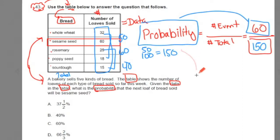So we could say that the probability of getting a sesame seed loaf of bread is going to be 60 over 150. But the answer is in percent form, so we've got to turn this fraction to a percent. Let's start first by reducing this fraction down. Do you see the zeros? That means both of these can be divided by a factor of 10. So let's try that. Divide the 60 by 10, the 150 by 10, reduces the fraction to 6 over 15.